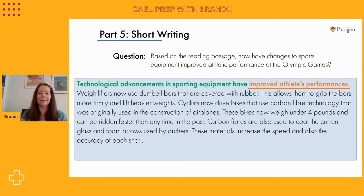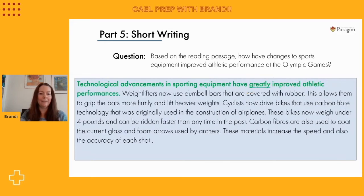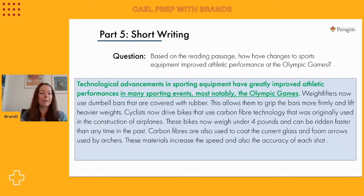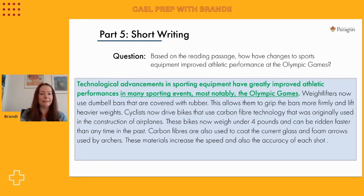It's fine, but it sounds a little simple. So I'm going to take the word 'athlete' and turn it into an adjective: athletic performances. I'll also add the adverb 'greatly' to emphasize how strongly the equipment has improved performance. Overall, this green revision is a lot stronger than how we started. But I'm noticing we're missing half the question — it asks us to specifically consider the Olympic Games, and we haven't mentioned the Olympics anywhere. So we're adding: these advancements have greatly improved athletic performances in many sporting events, most notably the Olympic Games. Now we've got a very strong topic sentence.